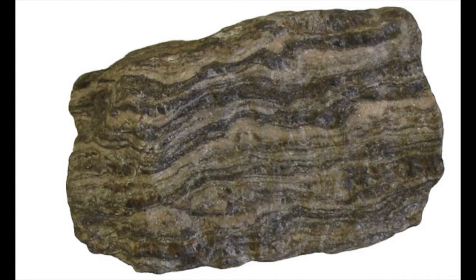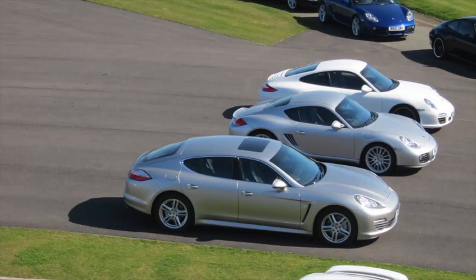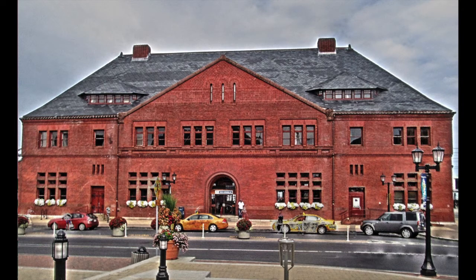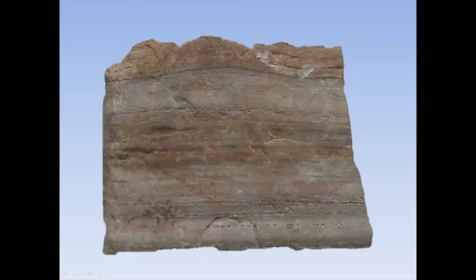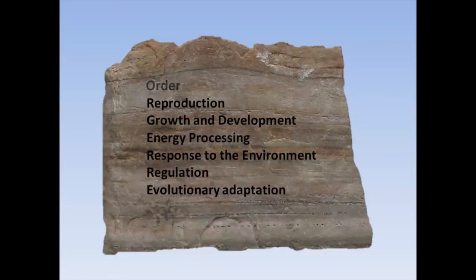Remember at the beginning of the video when we said these things were not alive? Now we will consider a few of these non-living things and determine why they cannot be considered alive. Let's look at a rock. Does a rock display order? Maybe — some rocks are striated, for example. Does a rock reproduce? No. Grow and develop? No. Is a rock able to process energy? No. A rock also can't respond to stimuli or regulate its internal environment. Have rocks evolved over time? No. So a rock doesn't display the properties of life and therefore cannot be considered alive.